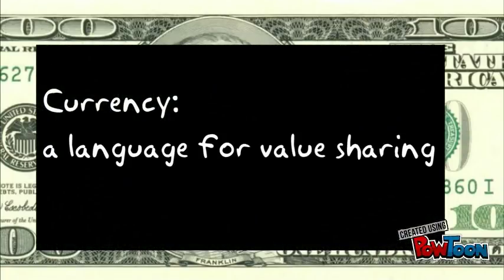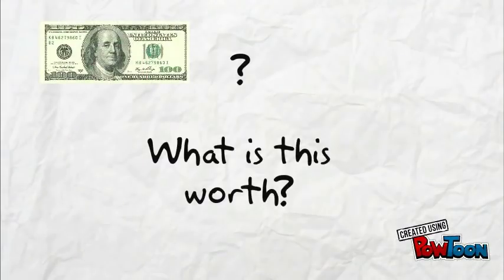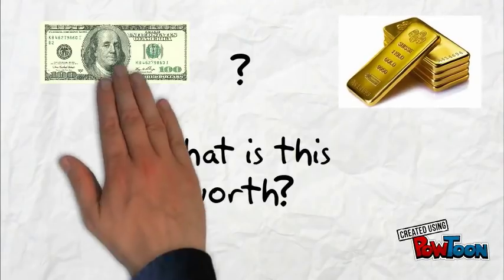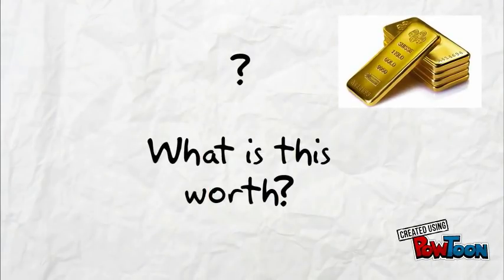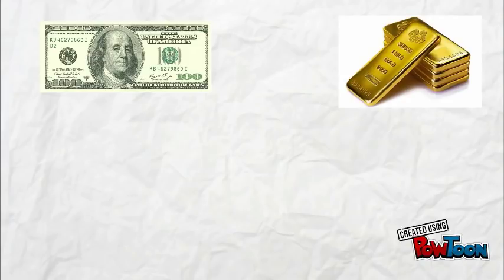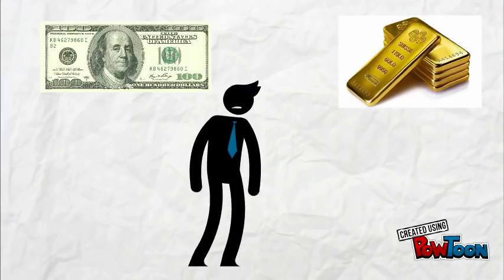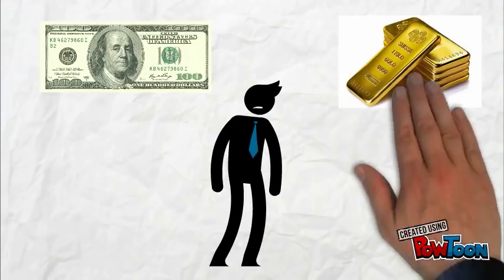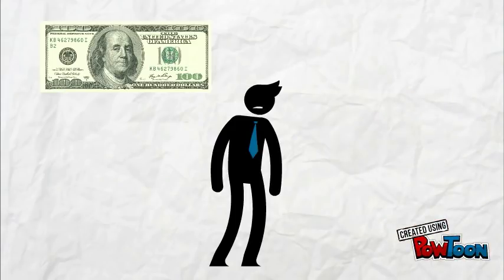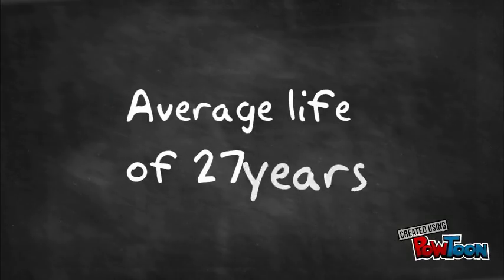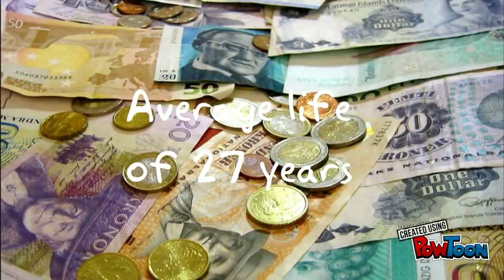So how does currency or money work? Where does it get its value from? Many argue that a currency only has value if it's convertible into gold or something else — a convertible currency is said to be backed by something. The surprising thing for a lot of people is that most major currencies like the dollar, euro, and yen aren't backed by anything. In fact, the average currency has only a 27-year life before it gets replaced by a new currency.